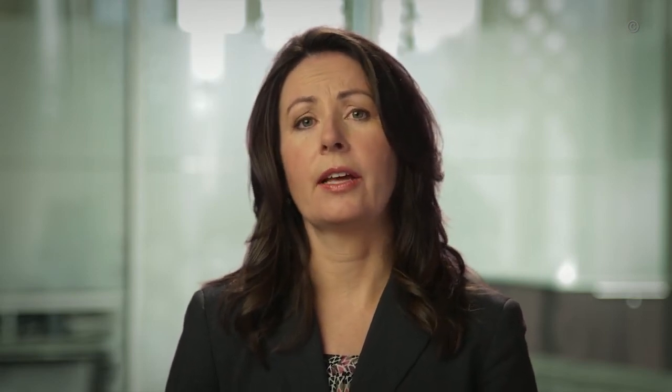Now we need to interpret what an NNT of 67 means. It means we would need to expose 67 teenagers to the intervention in order to prevent one pregnancy over a one-year period. This would constitute a relatively effective intervention, as few teenagers need to receive the intervention in order for one negative outcome, teenage pregnancy, to be avoided.